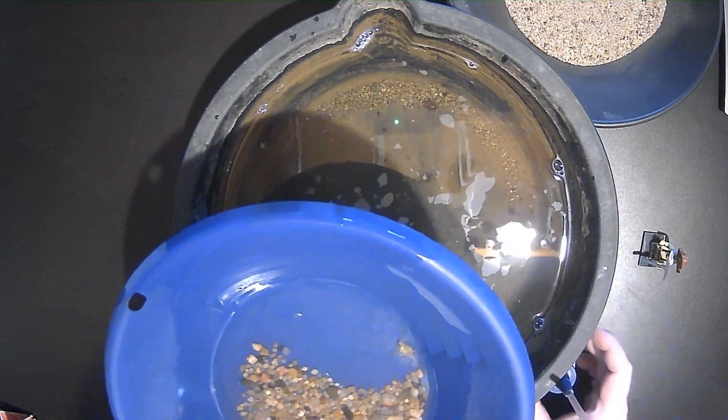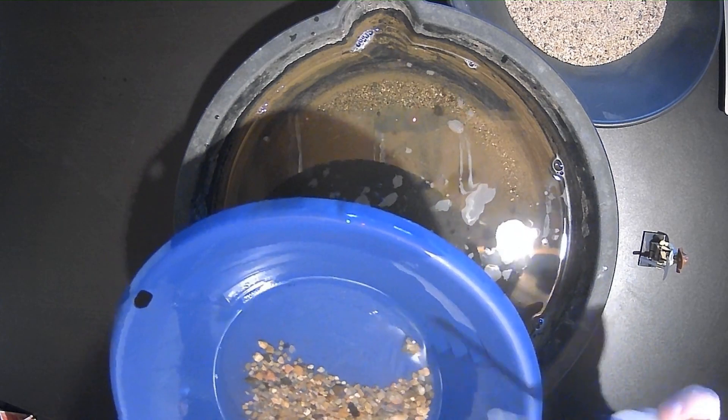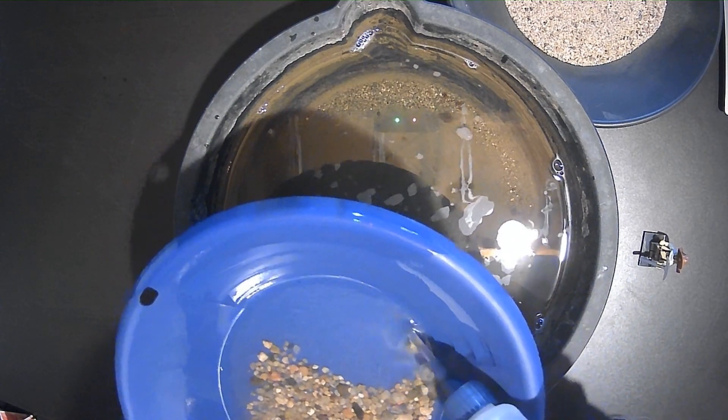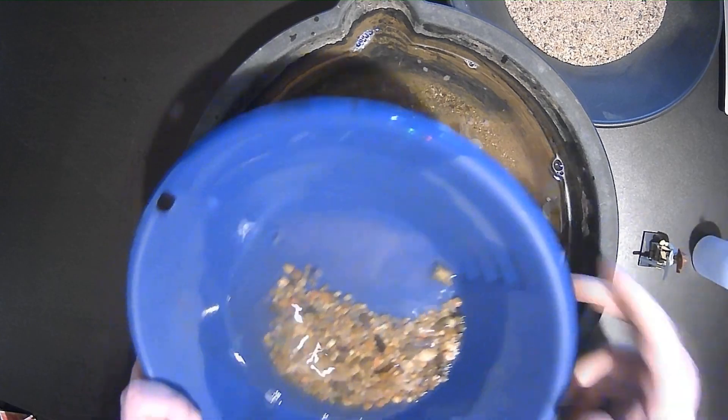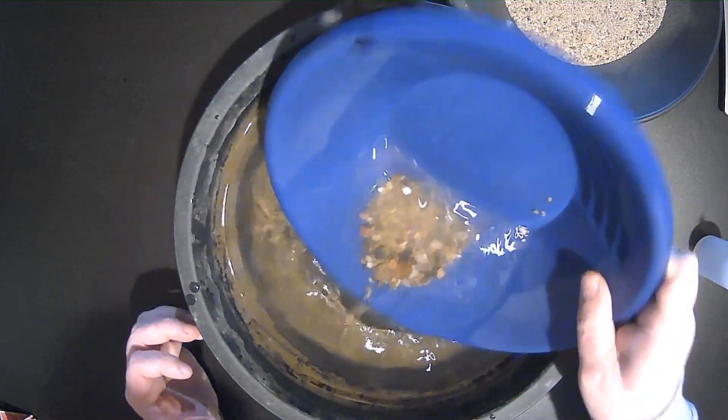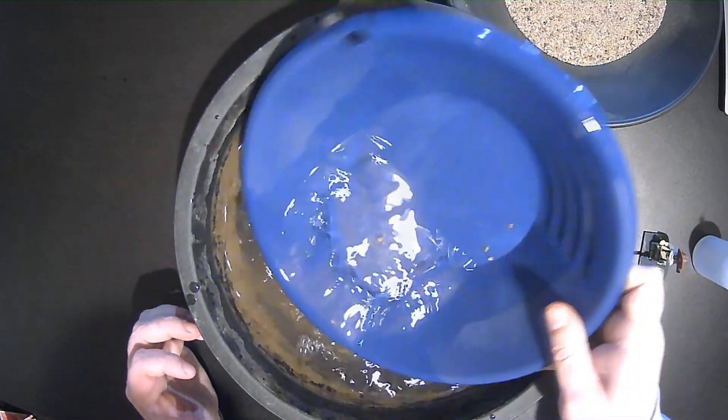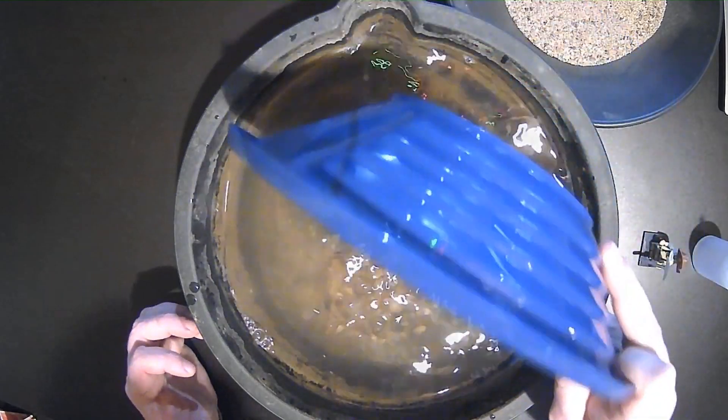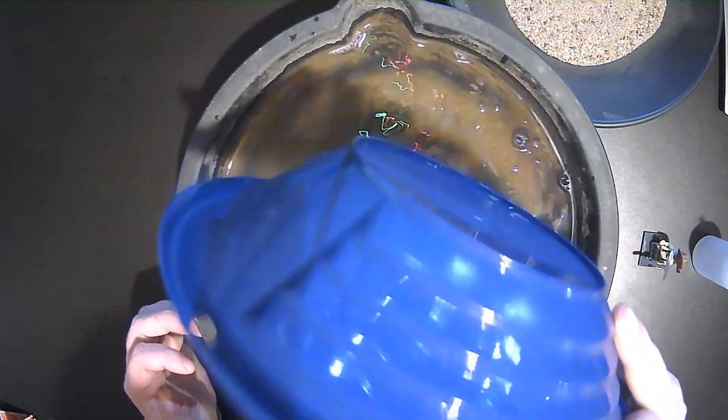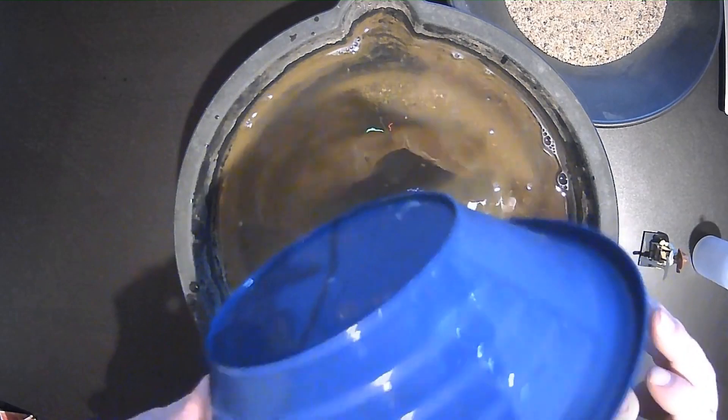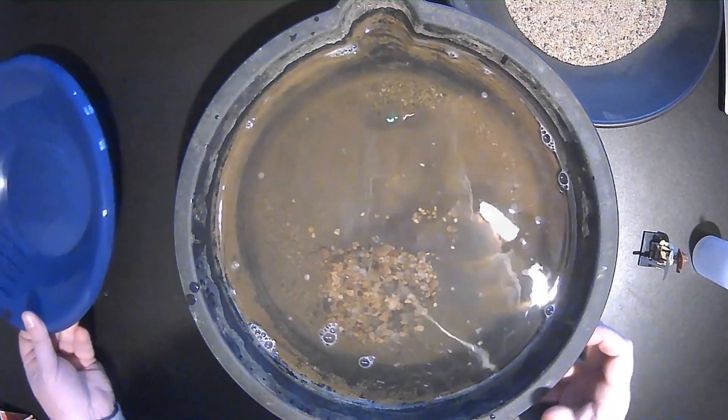But you did say this contains up to pickers. It doesn't bother me too much, but we'll see if there's any pickers that slid through the classifier. Sometimes that happens with a 10 mesh. You'll get elongated pickers or wiry type gold.